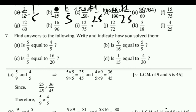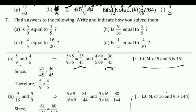Question number 7: Is 5 by 9 equal to 4 by 7? We find the LCM of 9 and 7, which is 63. Multiply: 5 fives are 25 upon 63, and 4 nines are 36 upon 63. Wait — actually LCM of 9 and 5 is 45, giving 25 upon 45 and 36 upon 45. Are they equal? No. So we put the not-equal sign.